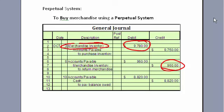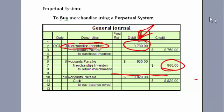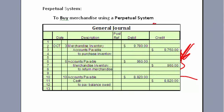Later, when we pay off our accounts payable, we look at the balance. The key point is that when we buy merchandise inventory it goes directly in, and when we return merchandise inventory it comes directly out. That's why it's always perpetual.